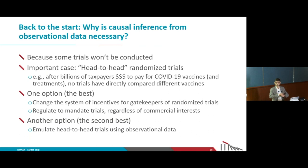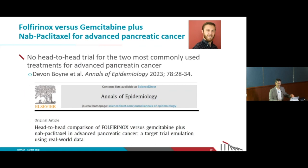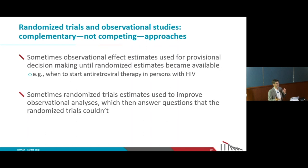Unless we completely change the system so that gatekeepers can conduct the trials society needs, we have to use observational data. Another example is cancer treatments where we know individual treatments work but don't know which is best — we can use observational data from an emulation of the head-to-head trial we don't have. The point is that randomized trials and observational studies are not competitors — they are complementary approaches.